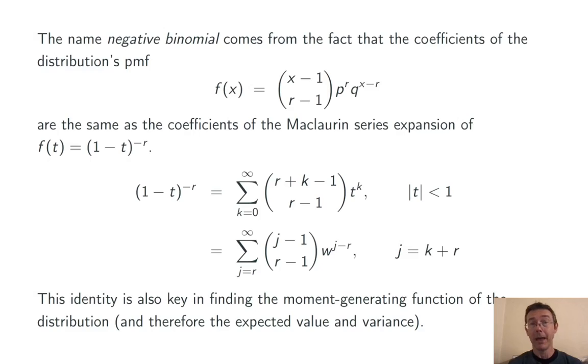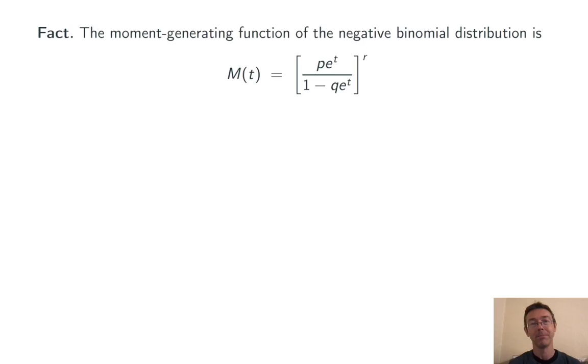This identity is thematic in calculations involving the negative binomial distribution. In particular, it comes up when we go to compute the moment generating function, and therefore the mean and expected value of this distribution. Here is the moment generating function: M(t) equals (p times e to the t) over (1 minus q times e to the t), the whole thing to the rth power.